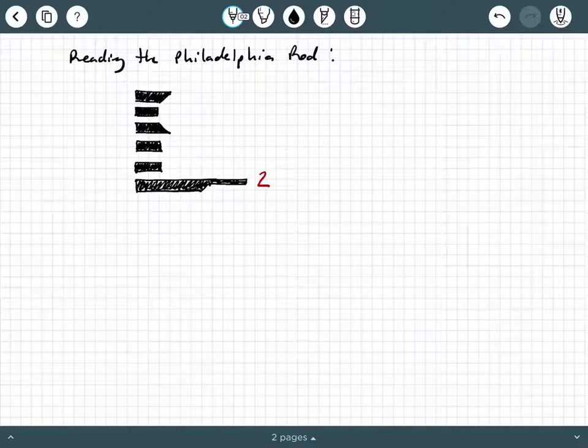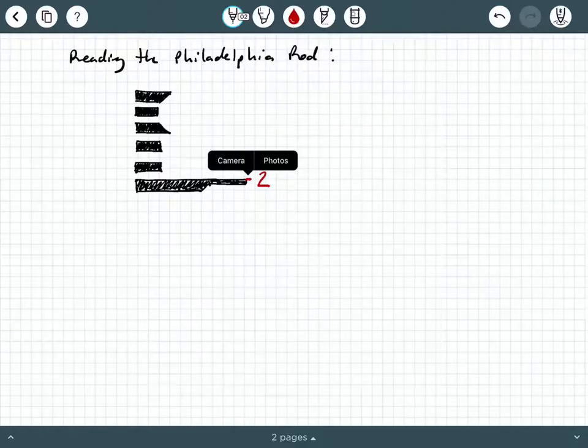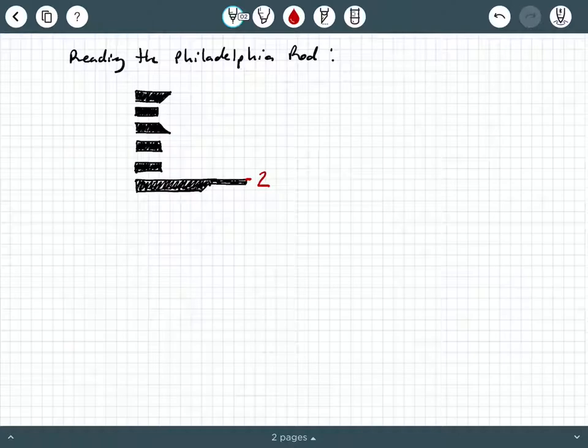So this big red 2 right here is going to be associated with the top surface of this weird elongated trapezoid. And that is going to be designated 2.00.